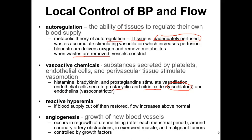The next thing is reactive hyperemia. If blood supply is cut off, then restored, flow increases above normal. For example, in a real situation where you can see this reactive hyperemia: in the winter, you go somewhere in cold weather, and when you go inside to a house, you can see the redness of your skin. This is reactive hyperemia.